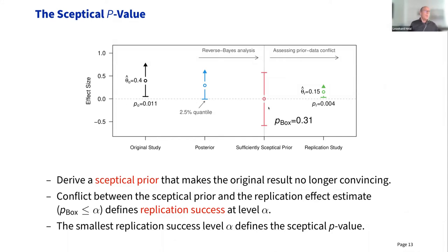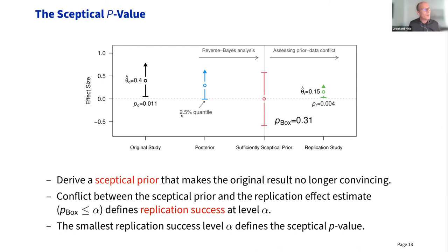You can perform this at any significance level. The smallest level at which you achieve replication success defines the skeptical p-value. This skeptical p-value has quite nice properties because it combines significance and relevance in one criterion.